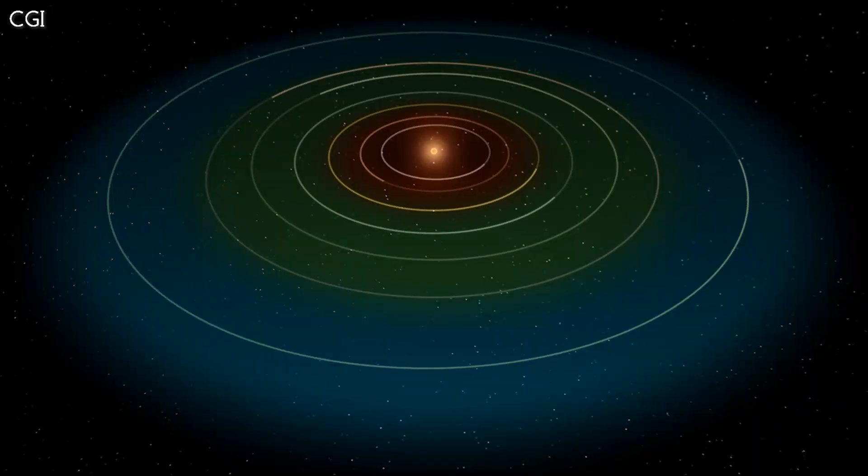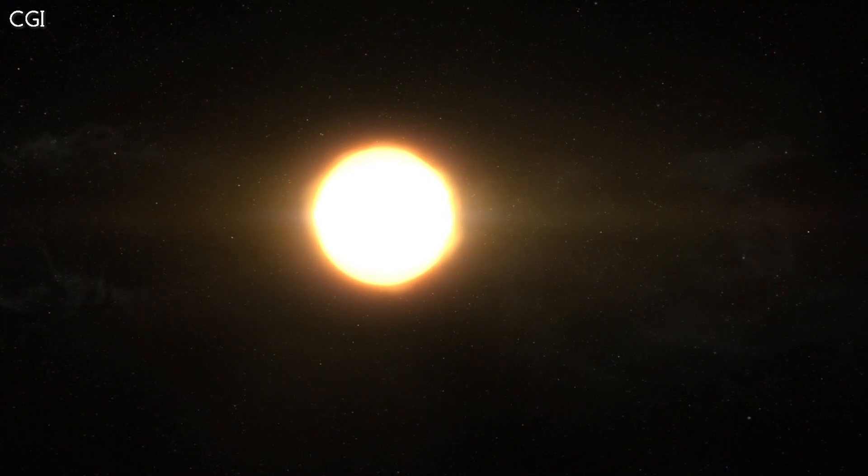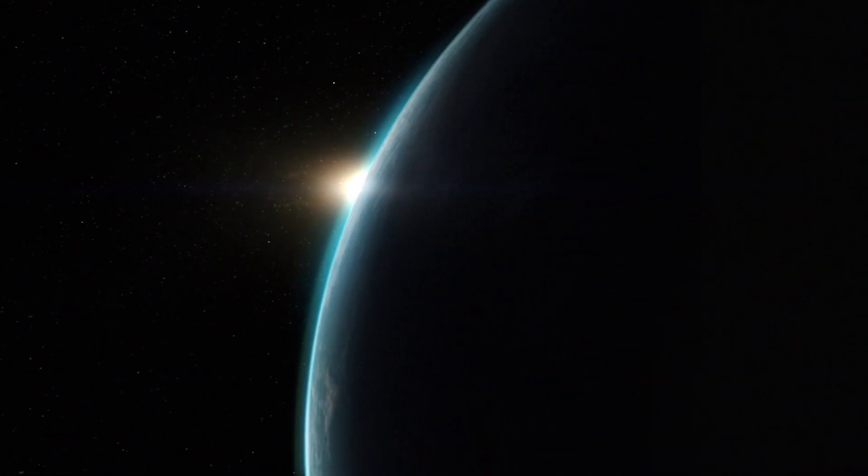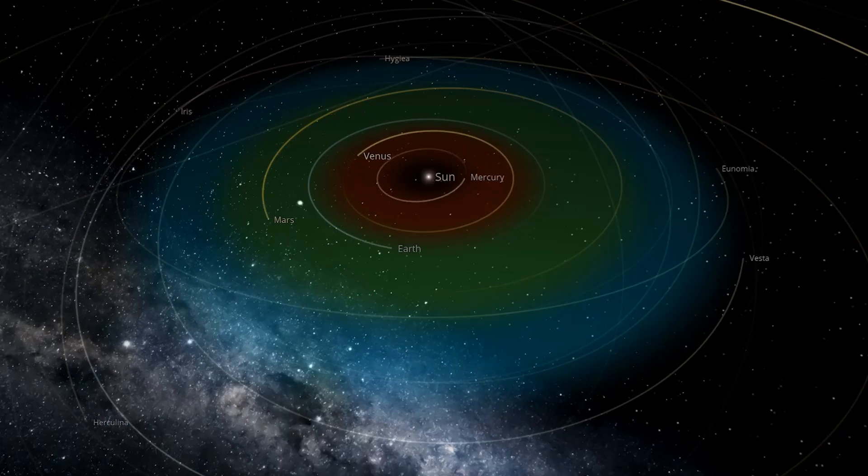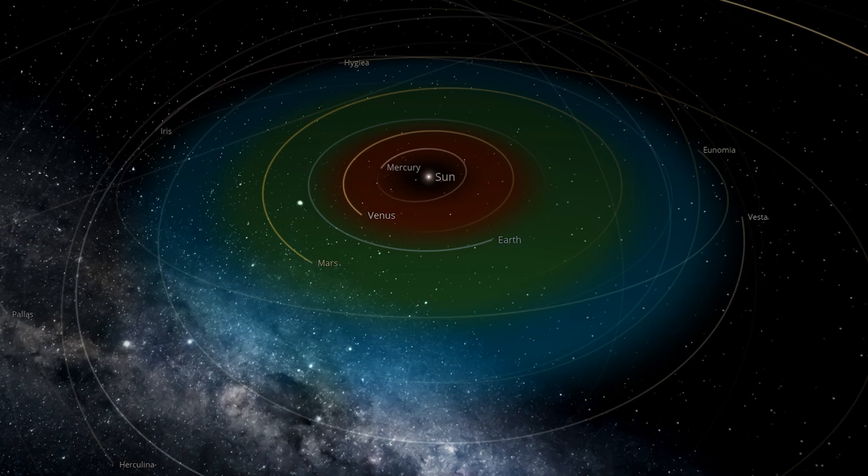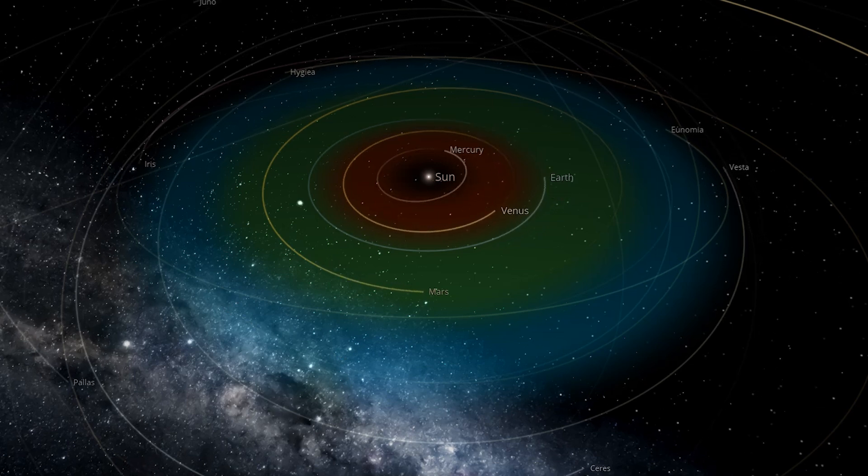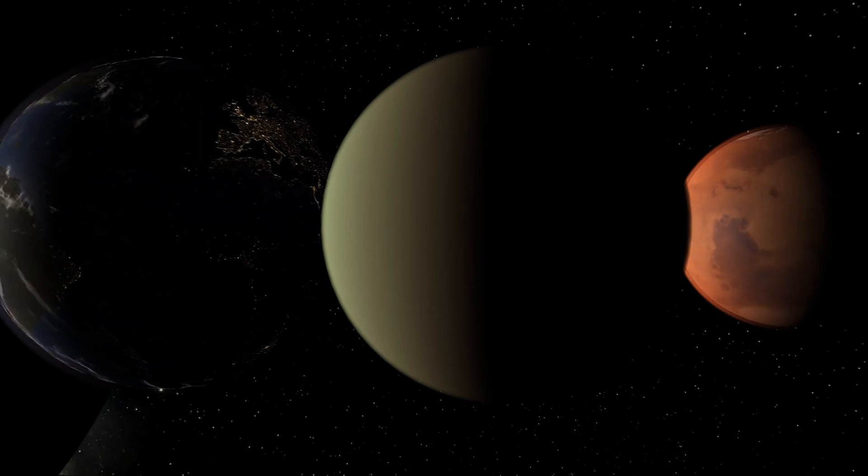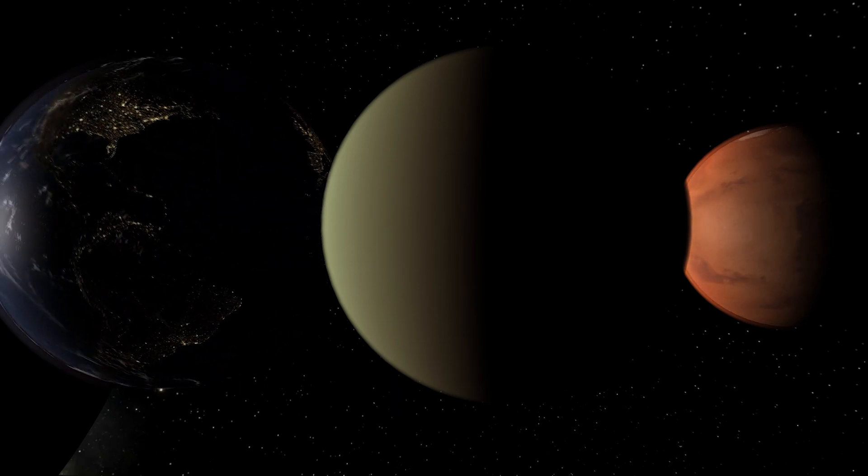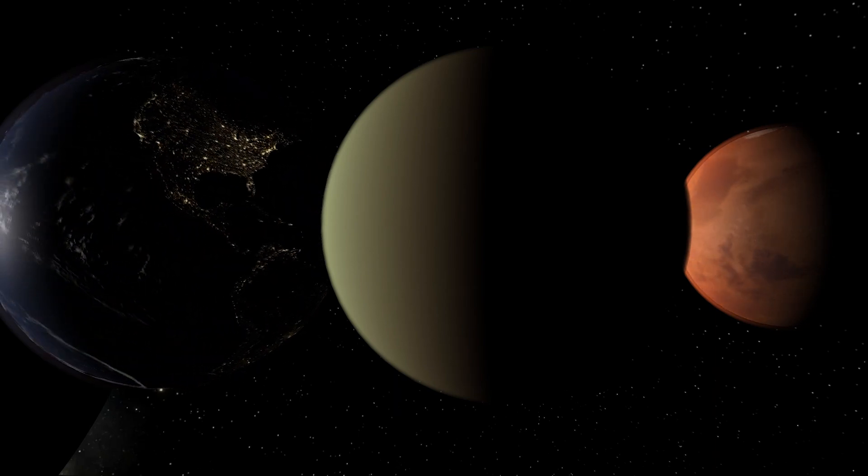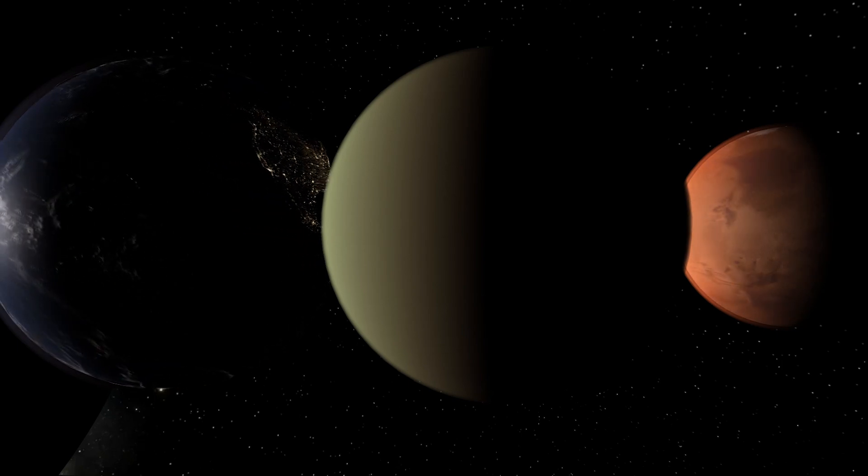So, the Goldilocks zone is where, assuming other conditions are right, liquid water could theoretically pool on the surface. This zone is always different depending on the parent star, and how big and hot it is. Looking at our own solar system, Venus might just be in the Goldilocks zone, as well as Earth and Mars. We already know that only one in three planets in our own solar system's Goldilocks zone can have liquid water, so just being in the right place is not always enough.